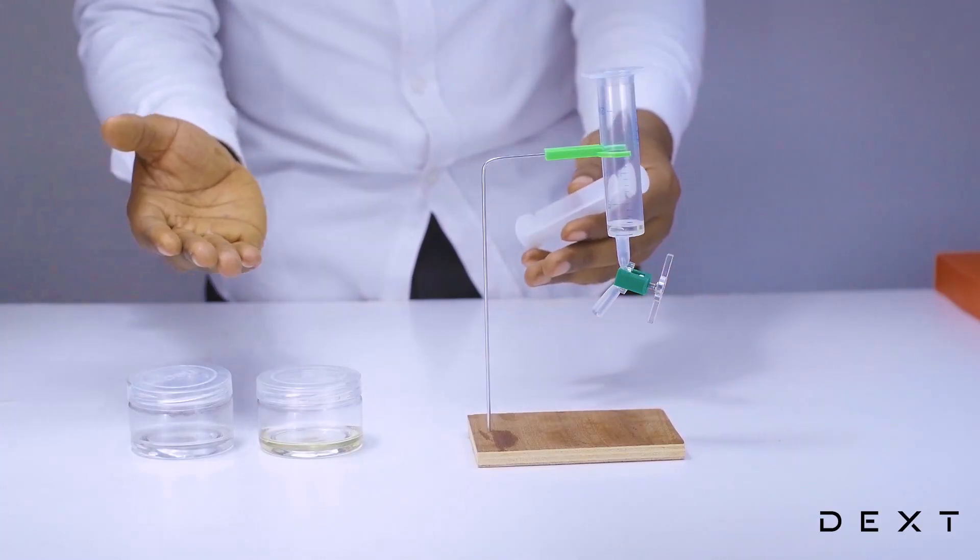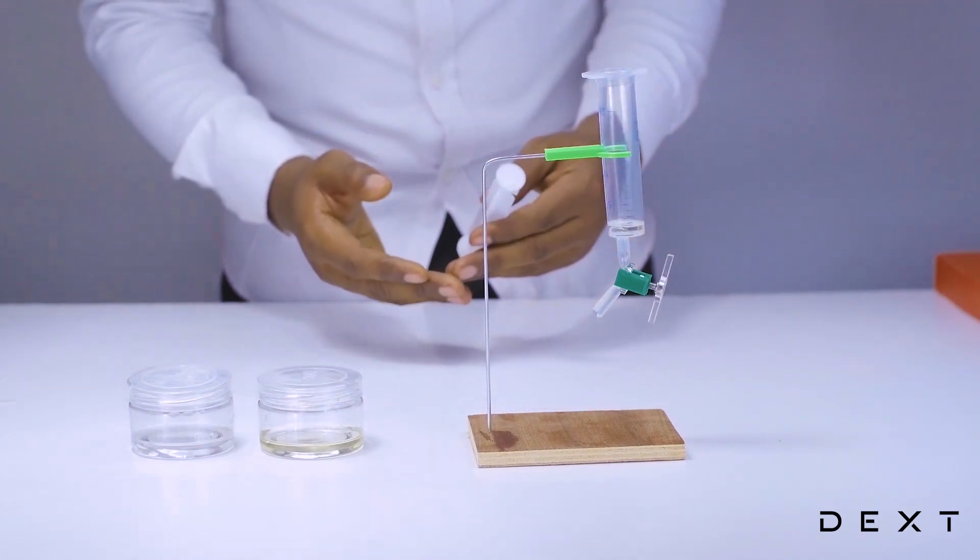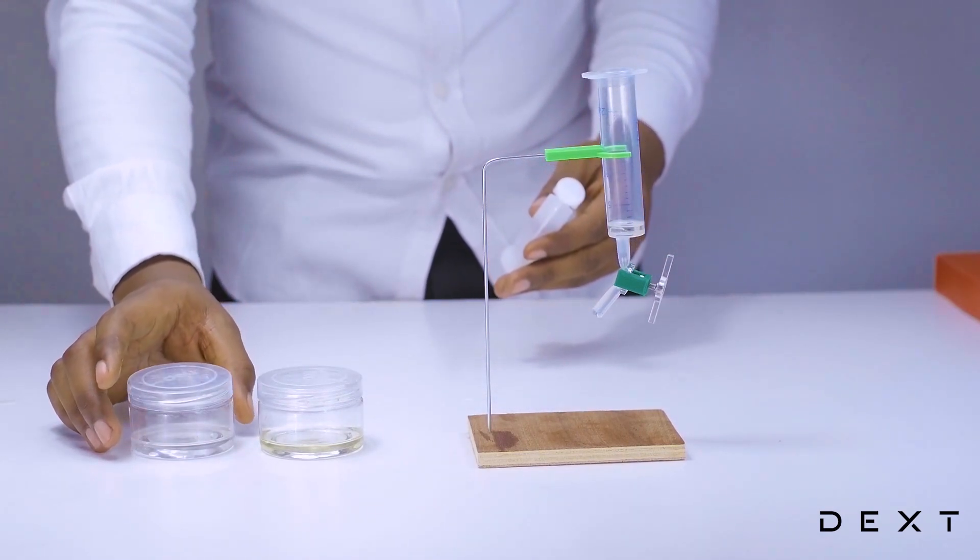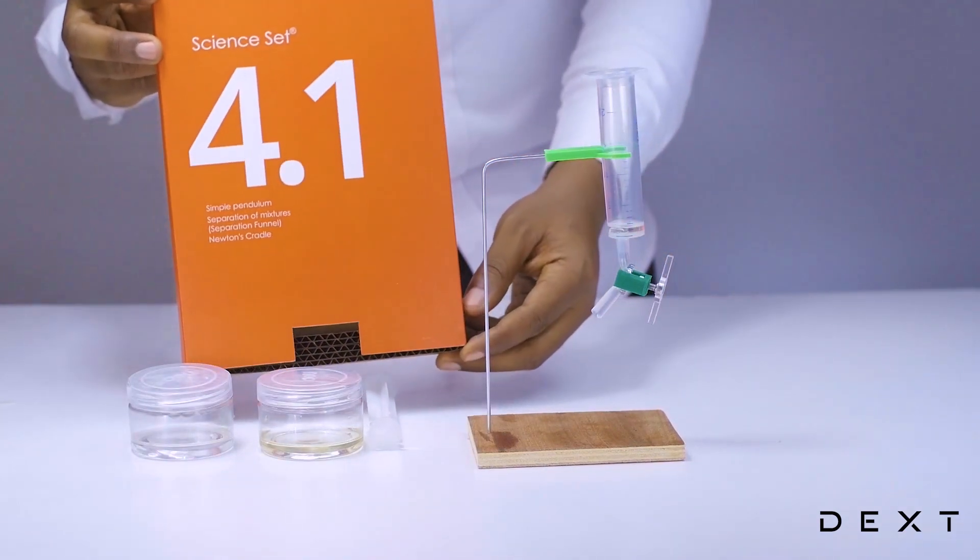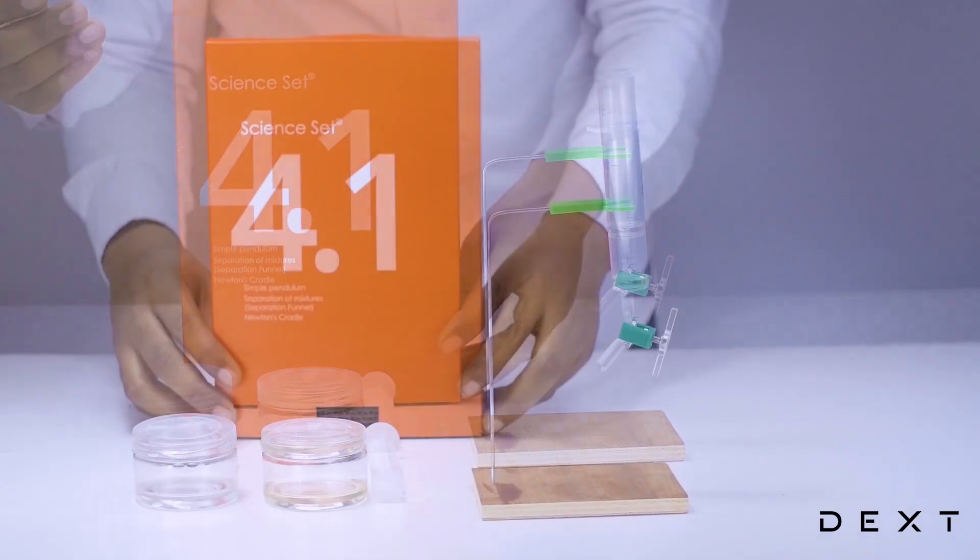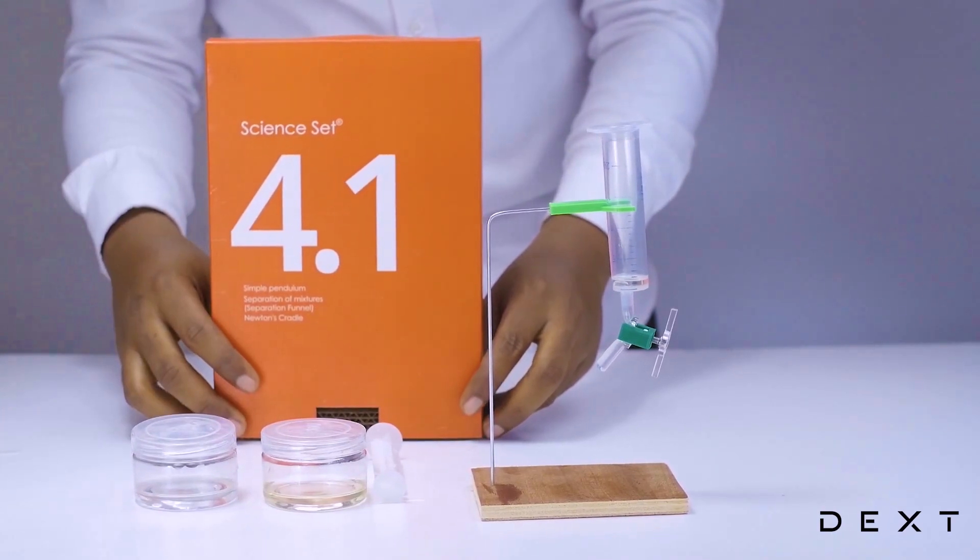They were first mixed together, but using our separating funnel, we have been able to nicely separate them back into the component. As always, this has been the tutorial using the Dext Science Set 4.1.